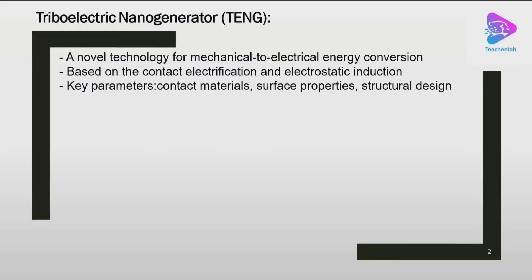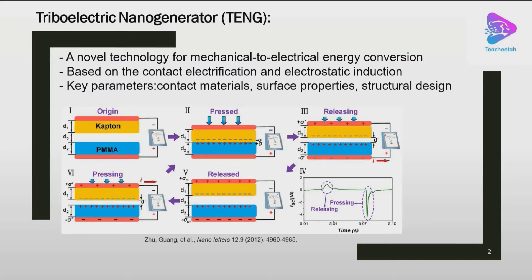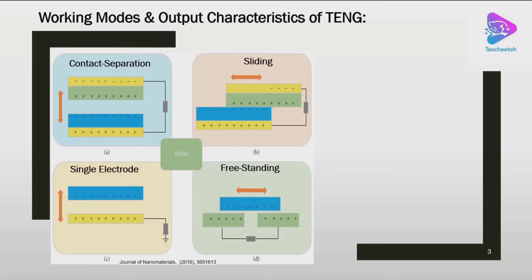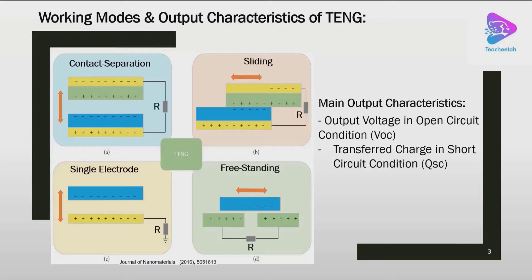TNG operates based on contact and separation modes of two dielectric materials. We have four different working modes: contact separation, sliding mode, single electrode, and freestanding. We modeled the sliding mode in the previous video. The main output characteristics of a TNG are the open circuit voltage and short circuit transfer charge, which we can find using COMSOL. When we have these two parameters, we can find other system outputs using formulas and mathematical calculations.